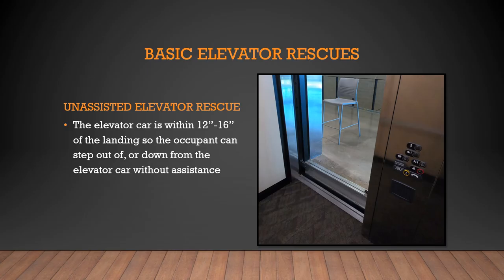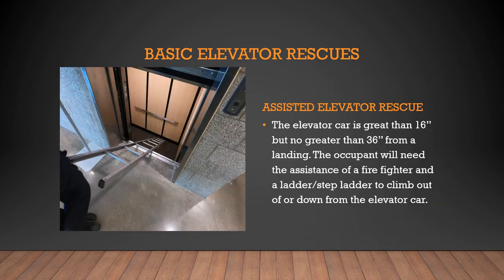Of the two basic elevator rescue categories, unassisted will be the most common. An unassisted elevator rescue is when the elevator car is within 12 to 16 inches of the landing and the occupants can step out without help. An assisted rescue is when the elevator car is stopped at a distance greater than 16 inches but not more than 36 inches — the occupants will need assistance using an attic or stepladder. If the distance is greater than 36 inches, you will need to request additional resources.